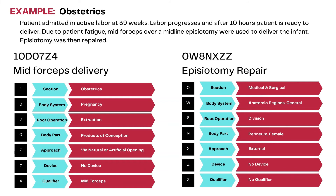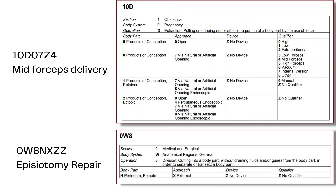Here's another example: a patient admitted in active labor at 39 weeks. Labor progresses and after 10 hours, due to patient fatigue, mid forceps over a midline episiotomy were used to deliver the infant, and the episiotomy was then repaired. The delivery is coded to extraction from the obstetric section, but the episiotomy is coded to the medical and surgical section under the root operation division because the episiotomy is performed on the mother. The tables show qualifier values of low, mid, and high forceps for the delivery.